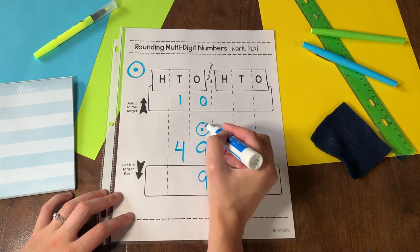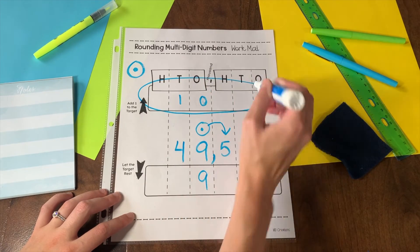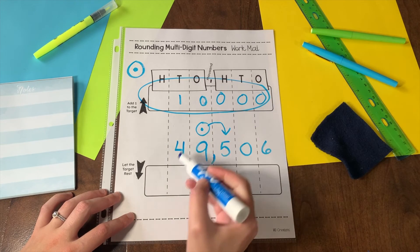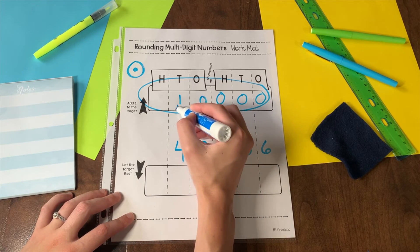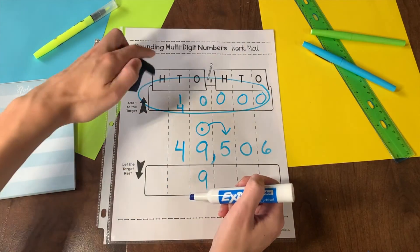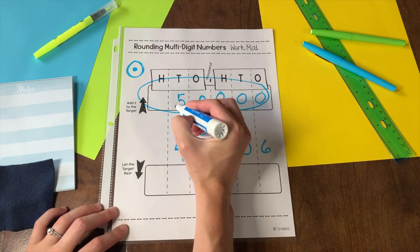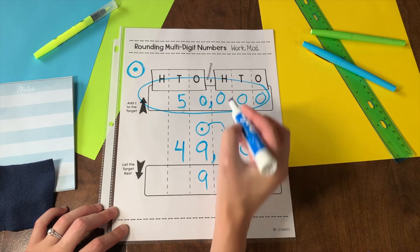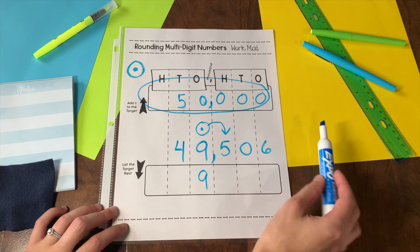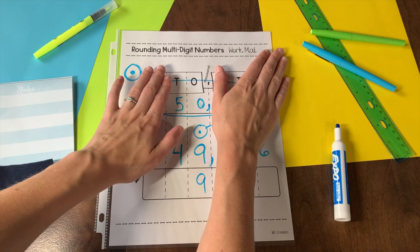In this case, when I look back and see the 5, I am rounding up. So the numbers behind my target change to zero. The numbers in front stay the same. I need to add 1 and 4 so that I have one digit in this 10,000 column. 1 plus 4 equals 5. 49,506 rounds to 50,000. If you stop and think about it, 49 is really close to 50,000.